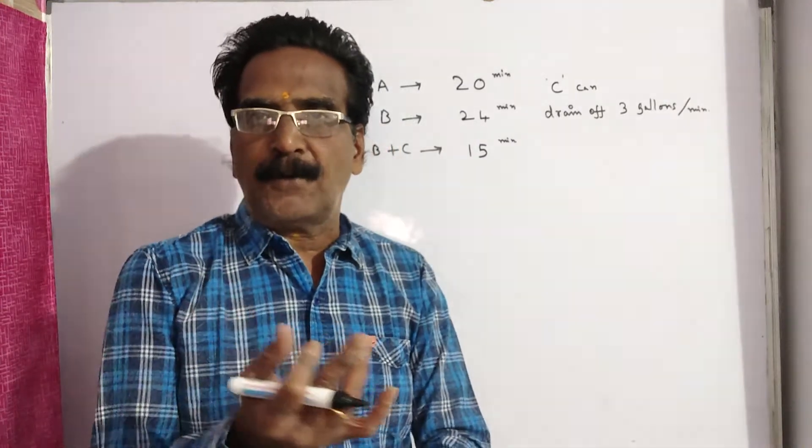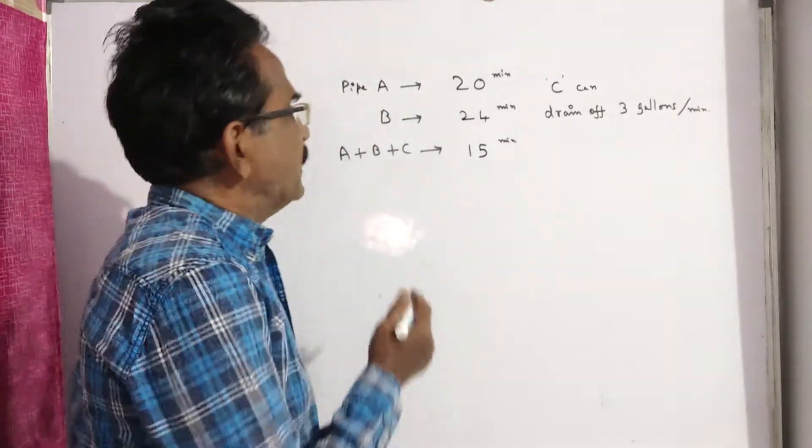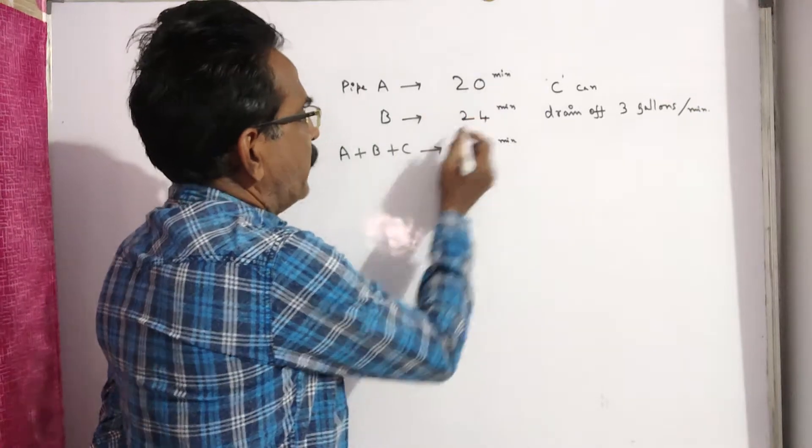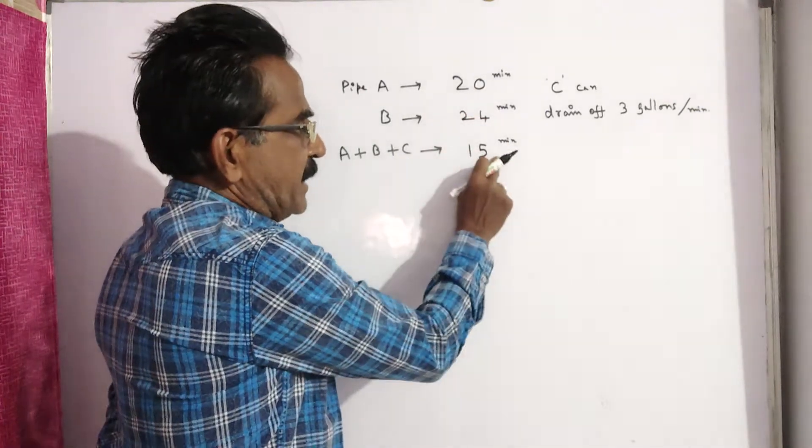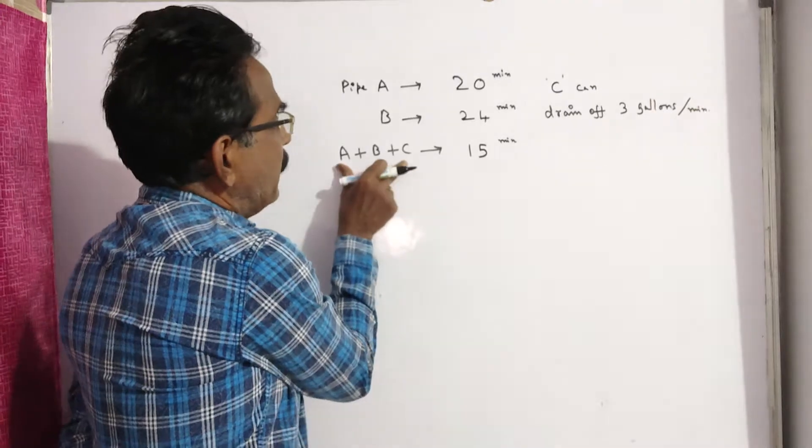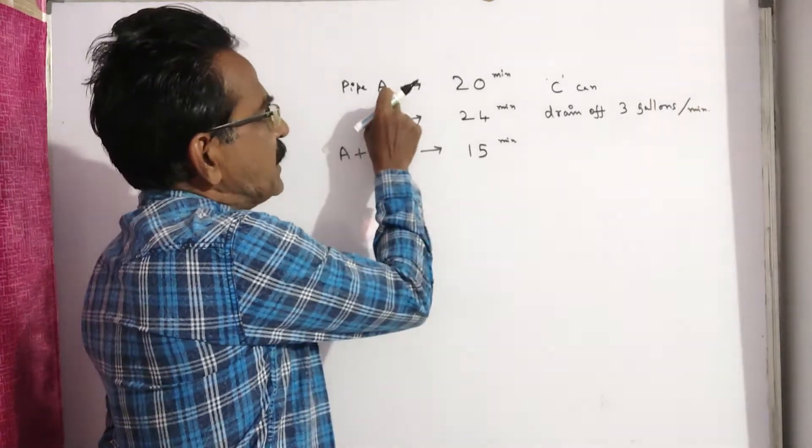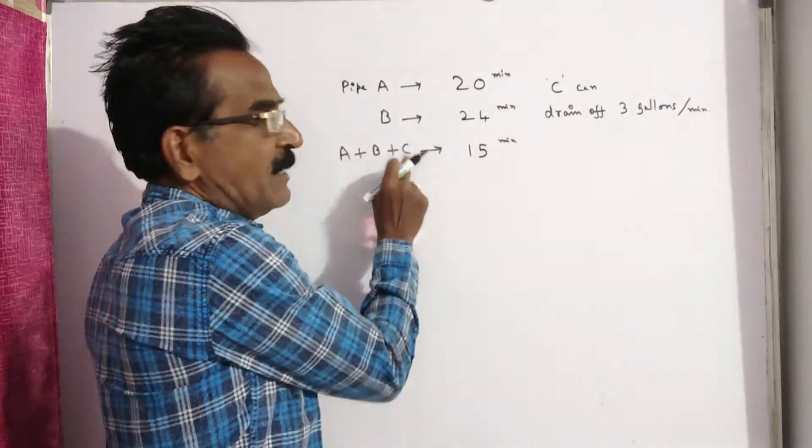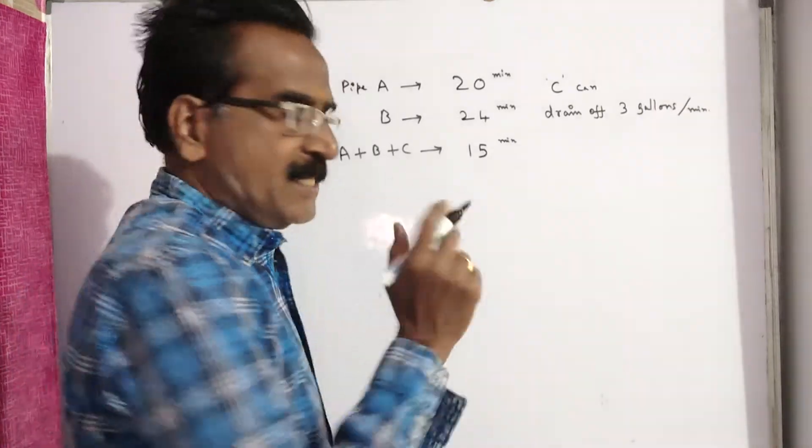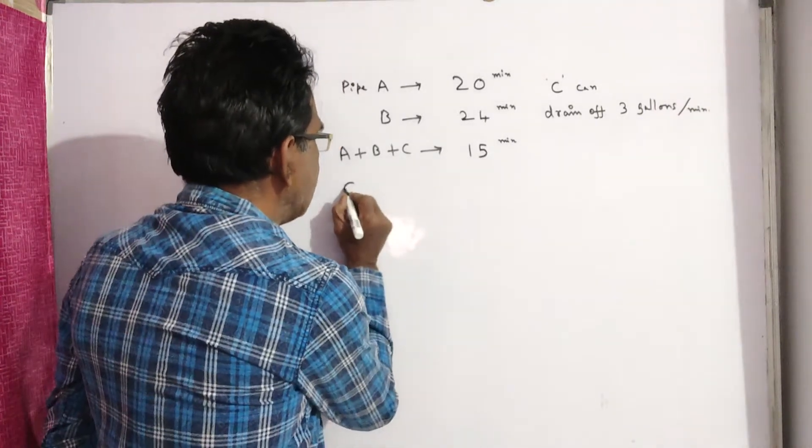This is an important problem. We know A, we know B, we know A plus B plus C. By doing C now, A plus B plus C minus A minus B, we will get the work done by C.